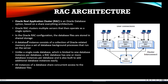A database instance consists of a collection of Oracle-related memory plus background processes. Unlike a single-node database which is limited to one instance, in a RAC environment we have multiple instances all connected to the same database. All instances concurrently share access to the database files. Communication between nodes is handled by the cluster interconnect, which is a high-bandwidth network active between all nodes.